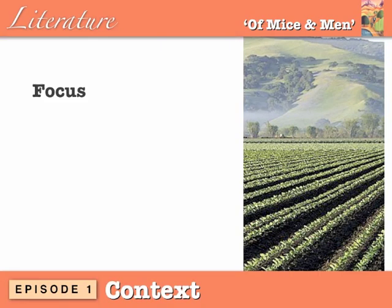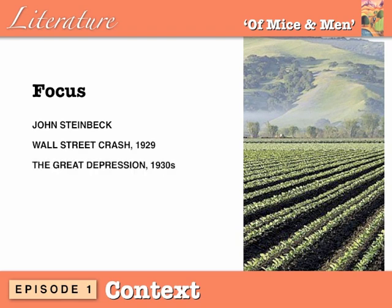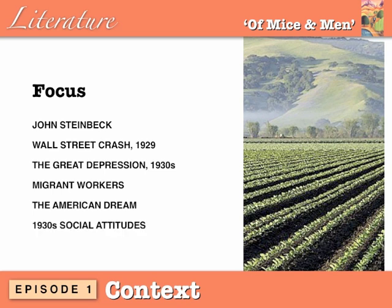We'll cover the following topics: first, John Steinbeck's background; then the Wall Street Crash and its impact; the Great Depression of the 1930s and how it affected the USA; what migrant workers are and the so-called American Dream and how it features in the novel; 1930s social attitudes present in the book; and the significance of the novel's title.